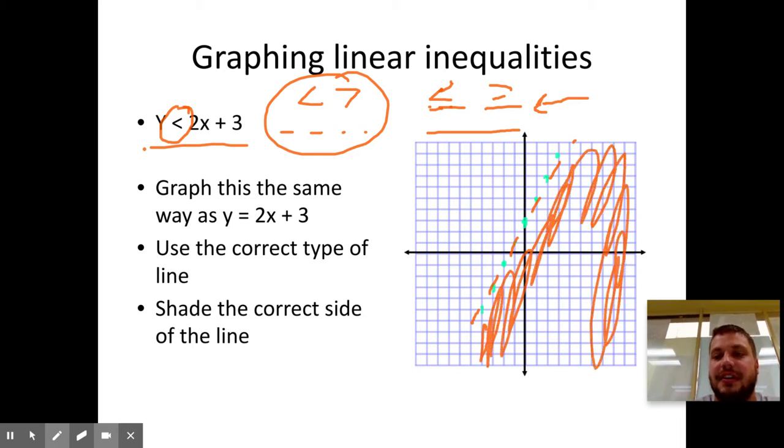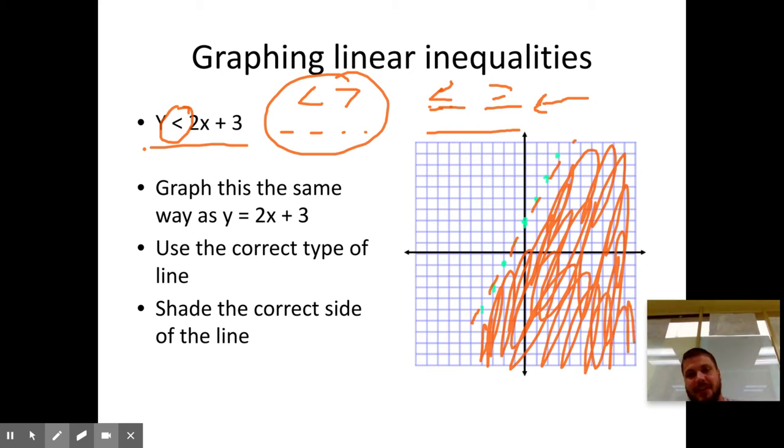So, you just, it says less than, so you shade below. Now, why are you shading? Why do we need these different types of lines?